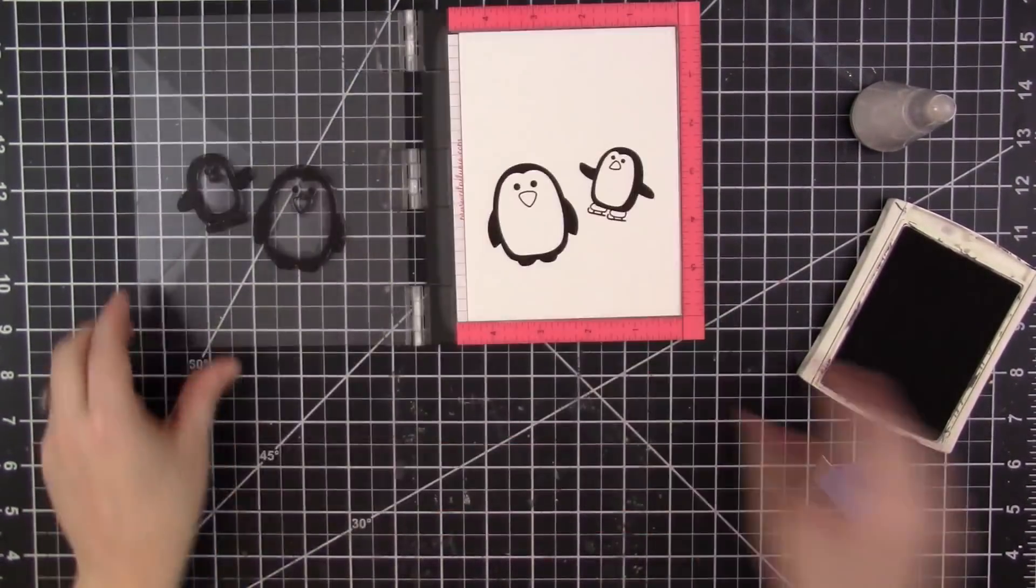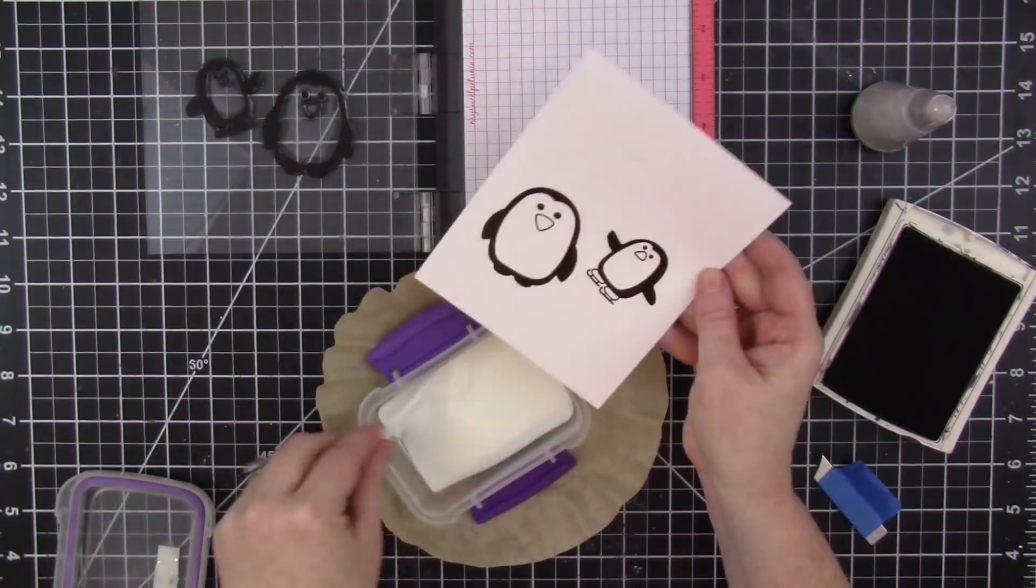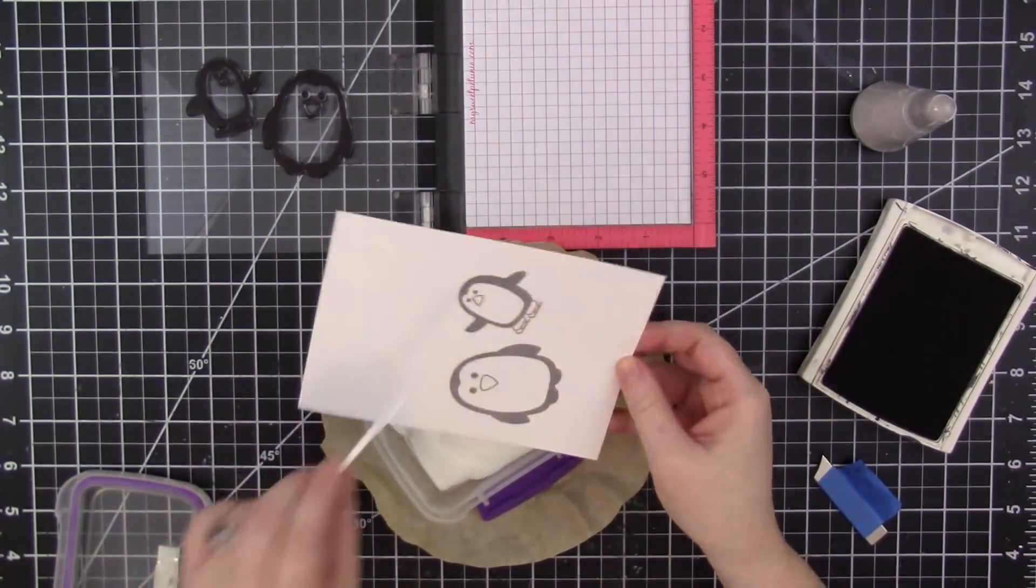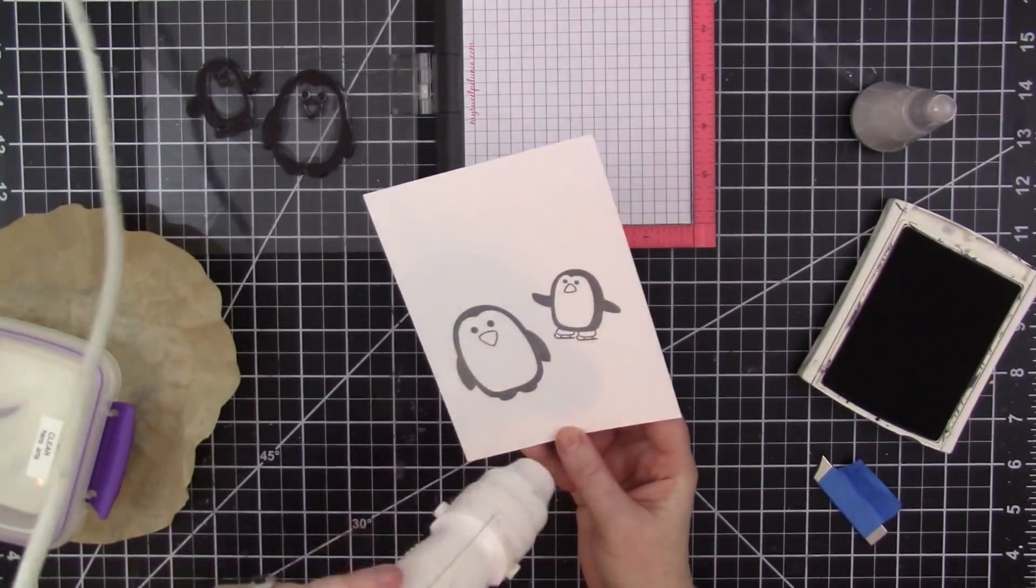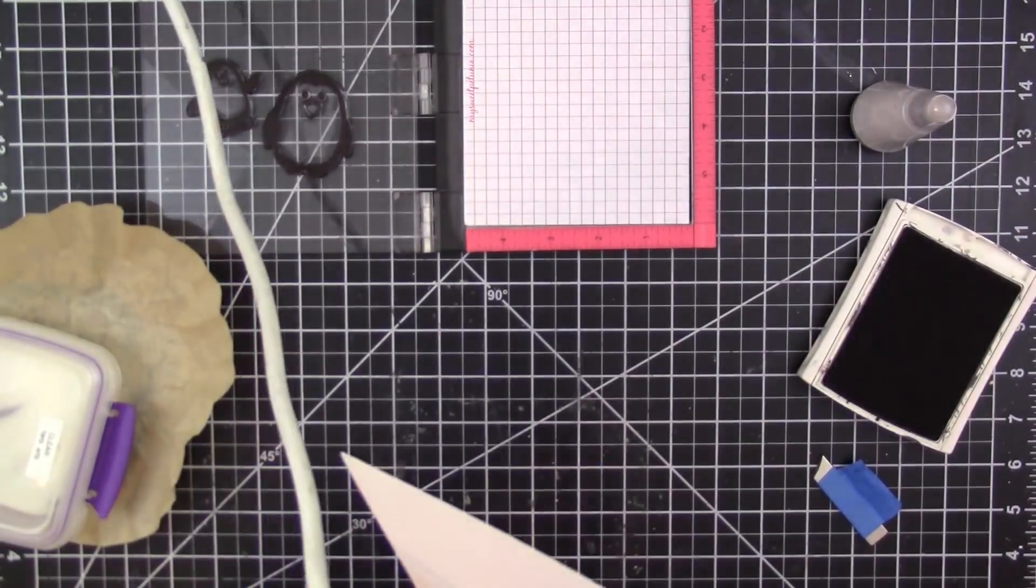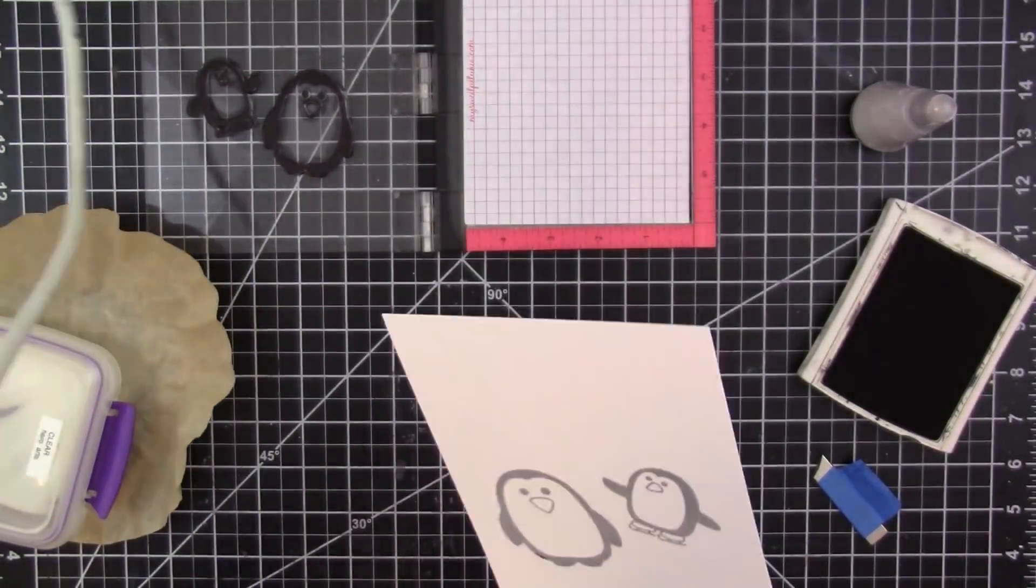And then I'm applying Hero Arts clear embossing powder over the stamped images, which gives the penguins a nice sheen because the embossing powder dries shiny after it melts. Then I also make sure that I run an anti-static powder tool over the paper before I stamp so that the embossing powder only sticks to the inked areas.